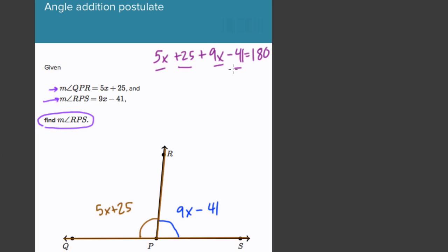So 25 and negative 41, that's negative 16, right? And 5x and 9x is 14x. So trying this again, we add 16 to both sides, right?